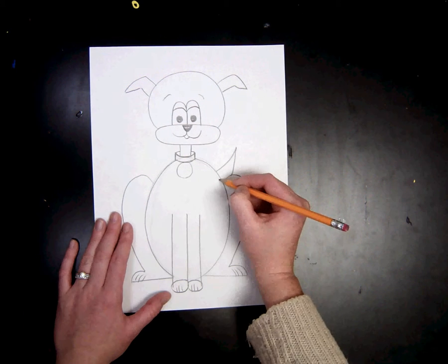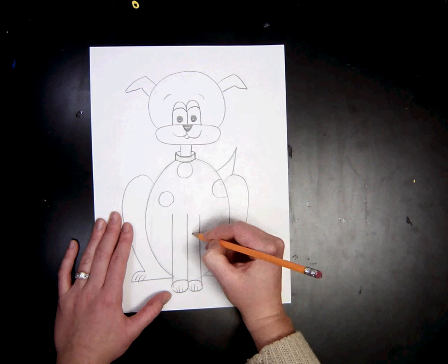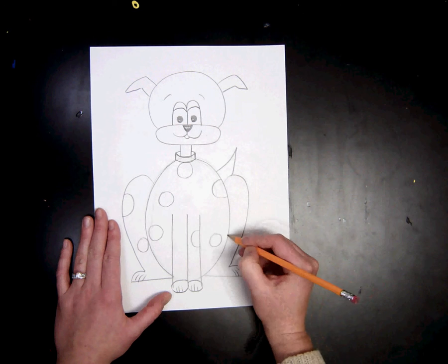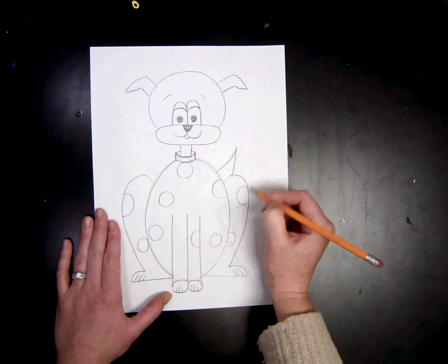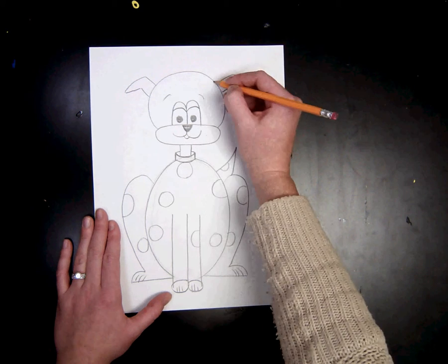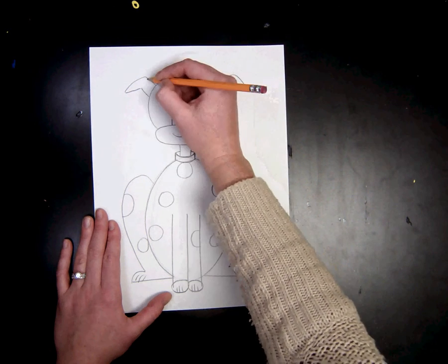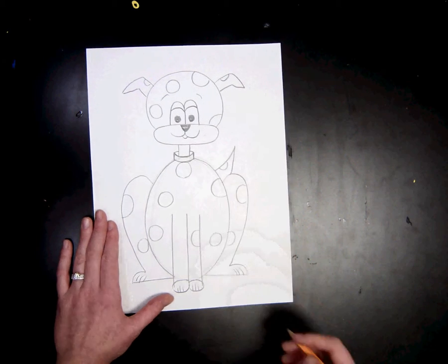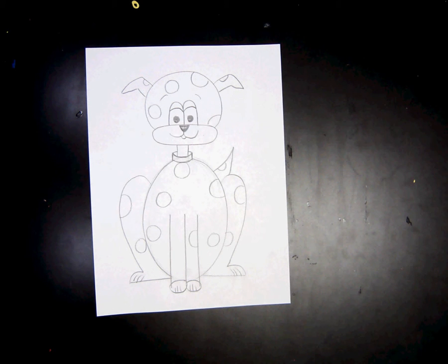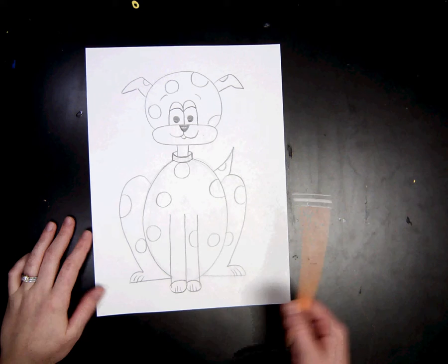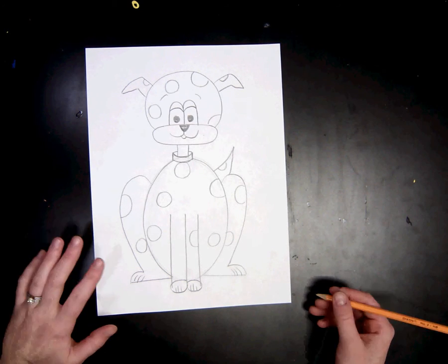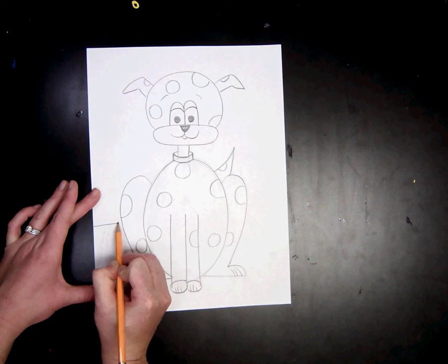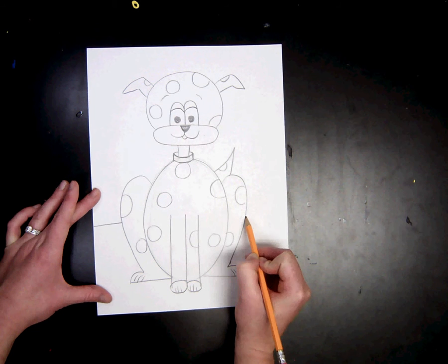I think I'm going to add spots. Now we're going to draw a horizon line to make it look like our dog is sitting somewhere rather than floating. So I'm going to draw a line, pick up my pencil, and then continue it on the other side of the dog.